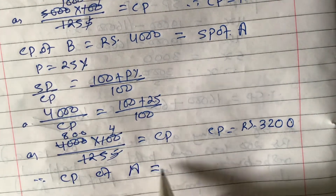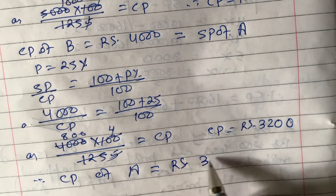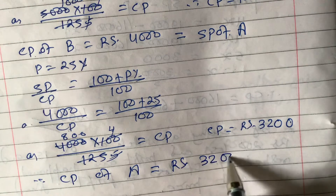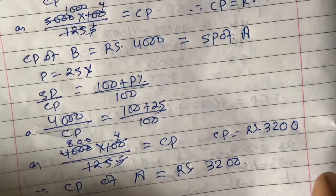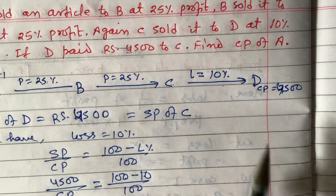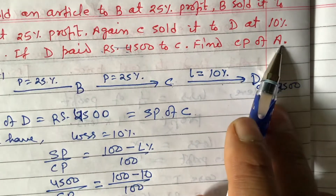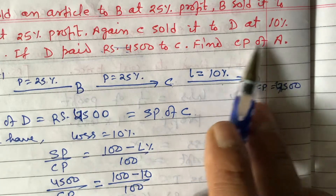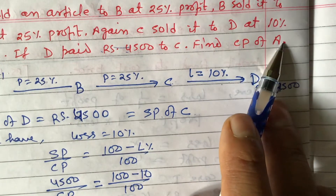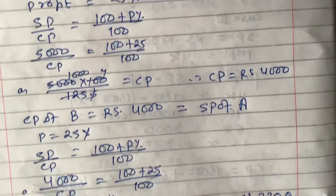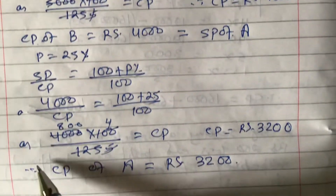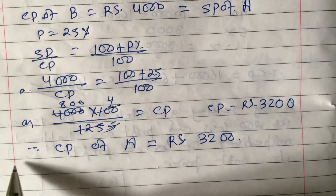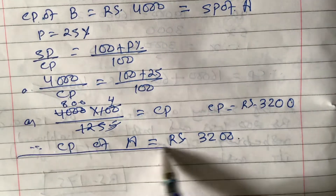Therefore, CP of A = ₹3,200. This is the answer we were asked to find — the cost price of A.